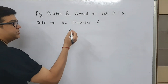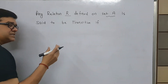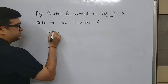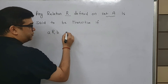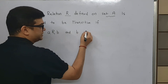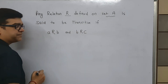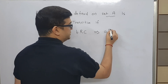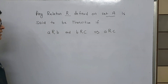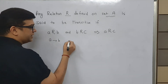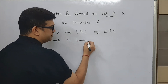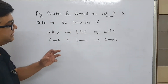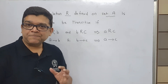Any relation R which is defined on a set A is said to be transitive if A is related to B under relation R, and we also have B related to C under relation R, and we also see that A is related to C under the same relation R. If A is related to B and B is related to C and we can also observe that A is related to C, then that kind of relation is said to be transitive.